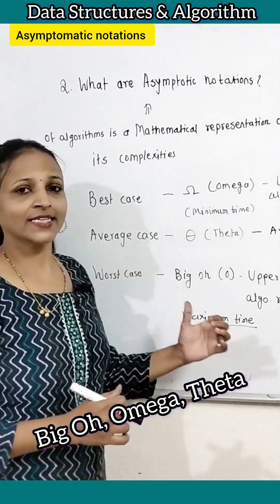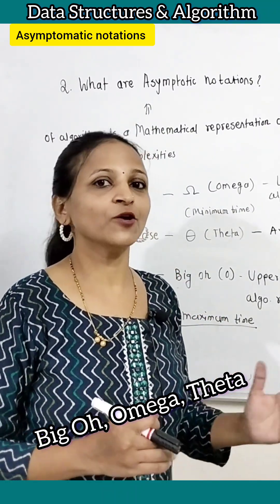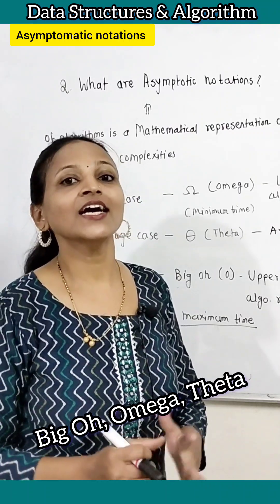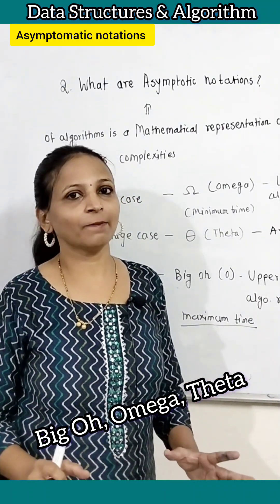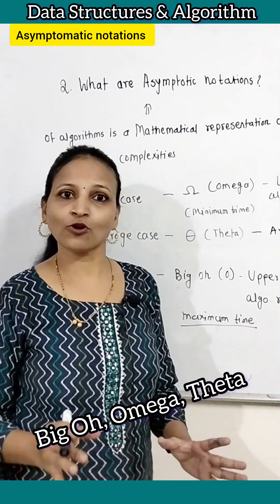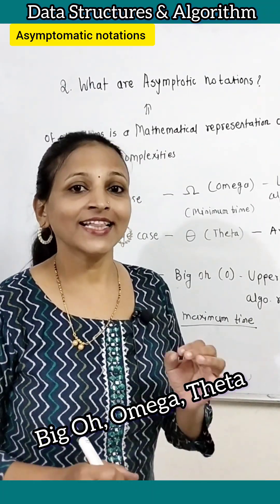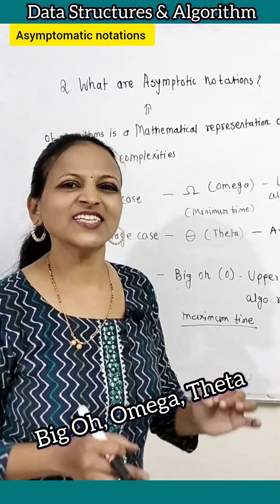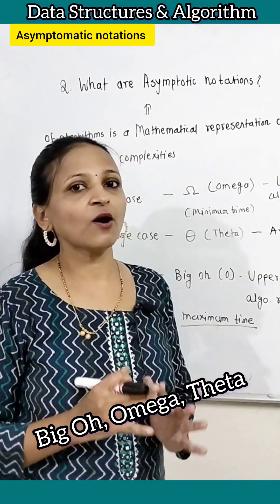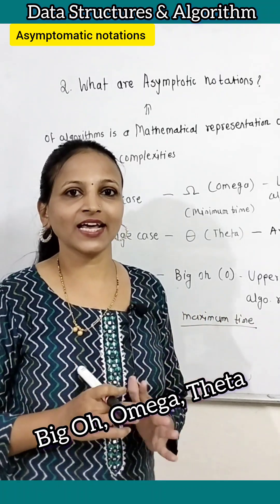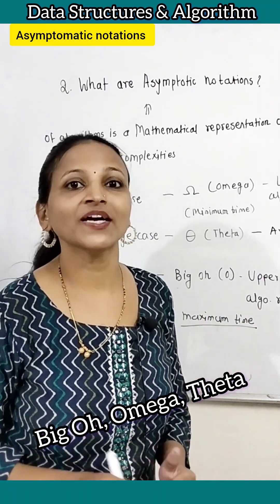The worst case time complexity can be represented with the help of big O notation. That is nothing but the maximum time or space taken by an algorithm for its execution — always the worst case. It represents the upper bound of running time or space of an algorithm.